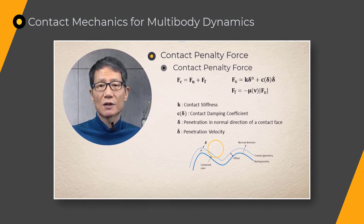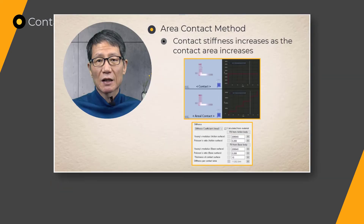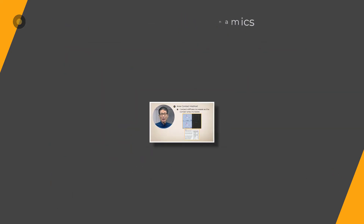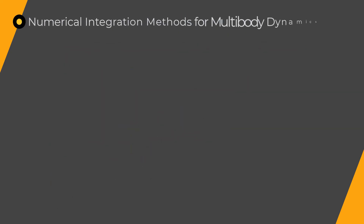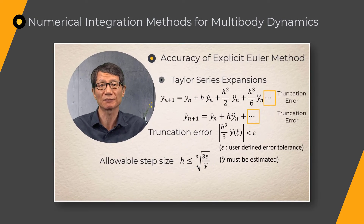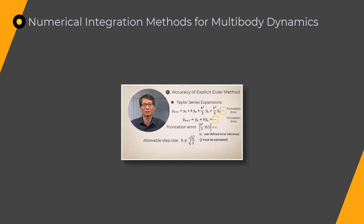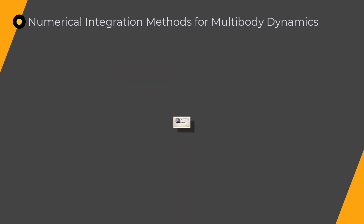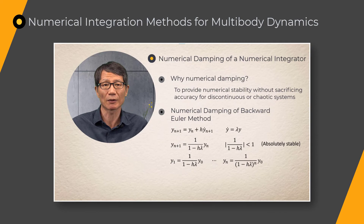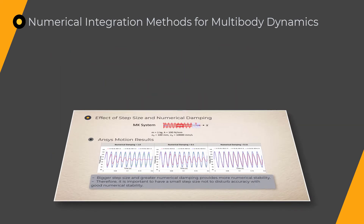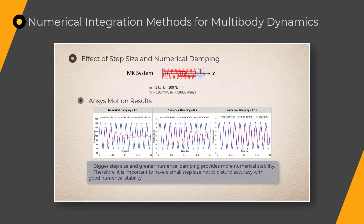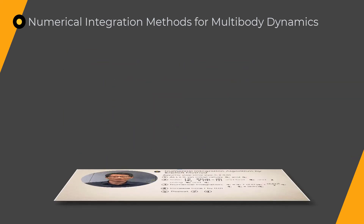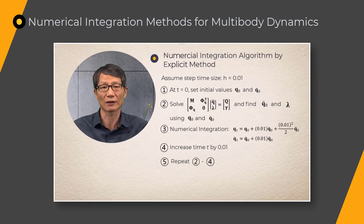Lesson 8 presents Accuracy of Explicit and Implicit Euler Method, Stability of Integration Method, Numerical Damping of an Integrator, Effects of Step Size and Numerical Damping, and Numerical Algorithms for Dynamic Analysis with Explicit and Implicit Methods.